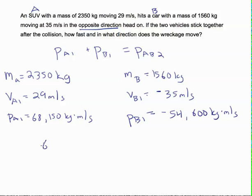So our momentum here is negative 54,600. So if we add these up, we get our PAB2. So PAB2 is equal to 13,550.